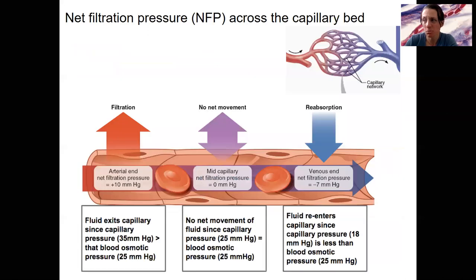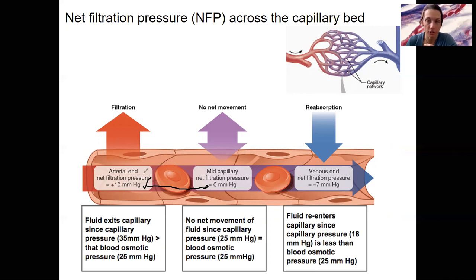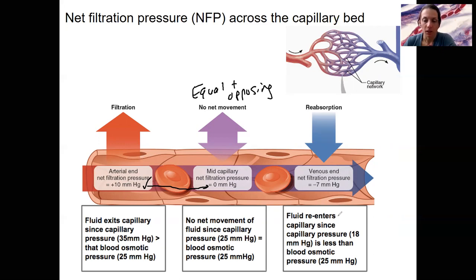Here is a summary. At the arterial end, you've got filtration. In reality, it's going to start higher and the net filtration pressure is going to decrease until it gets to zero. Capillary hydrostatic pressure is greater than osmotic pressure — that results in filtration. No movement at the center because the two are equal and opposing forces. Then we've got reabsorption when we have that blood pressure drop — capillary pressure is now lower than the pull in from osmotic pressure. These things can be altered in dysfunction; I'll talk about that briefly when we get to the lymphatic system.